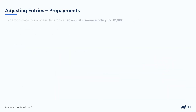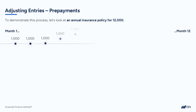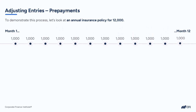Imagine again that you've purchased a 12-month annual insurance policy for $12,000. In a way, this means you're making a prepayment up front for 12 months of insurance coverage, with each month essentially costing $1,000 — just taking the $12,000 and dividing it by 12 months.